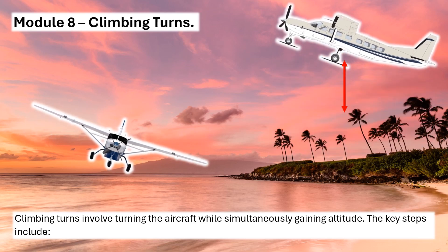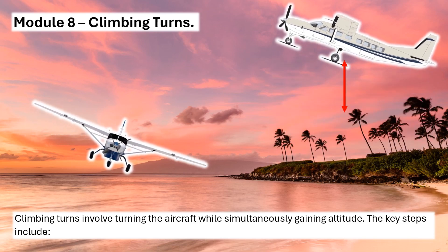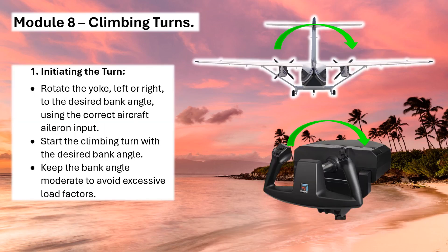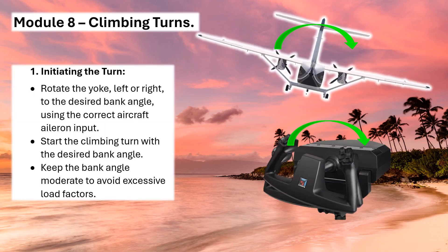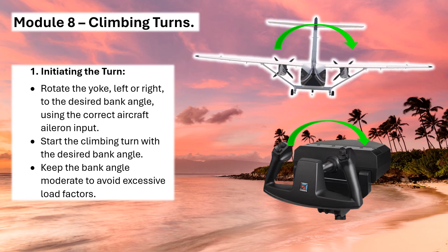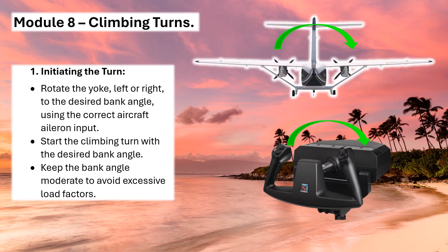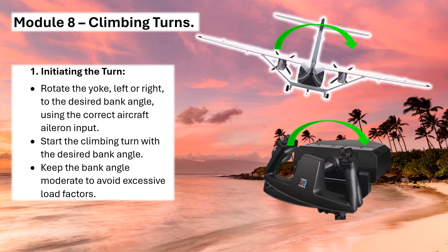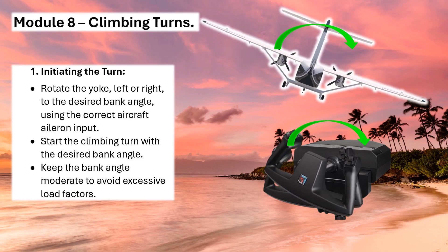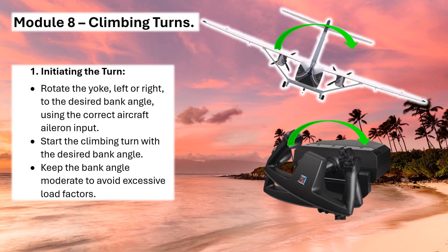Climbing Turns. Climbing turns involve turning the aircraft while simultaneously gaining altitude. The key steps include: 1. Initiating the turn – rotate the yoke, left or right, to the desired bank angle using the correct aileron input. Start the climbing turn with the desired bank angle. Keep the bank angle moderate to avoid excessive load factors.